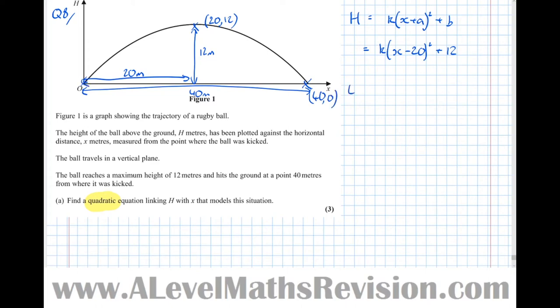So what I'm going to do is let h equals 0 and x equals 0. I'm going to use the origin because that's much easier to sub in. Which means that 0 equals k times 0 take 20 squared plus 12.